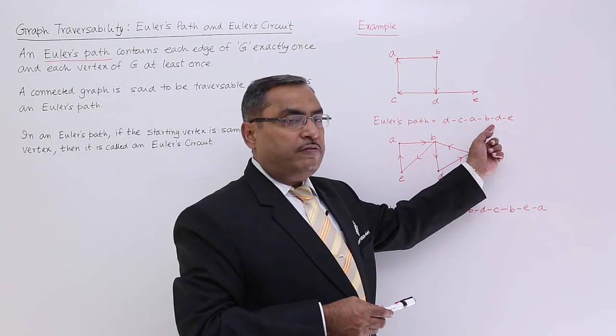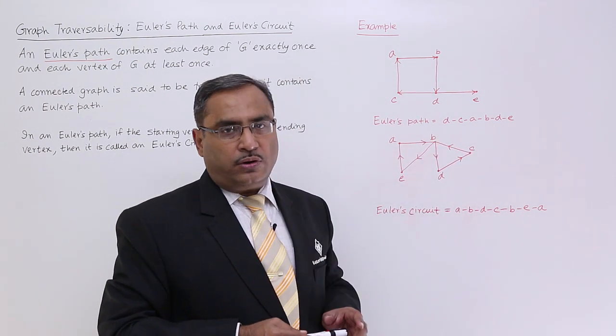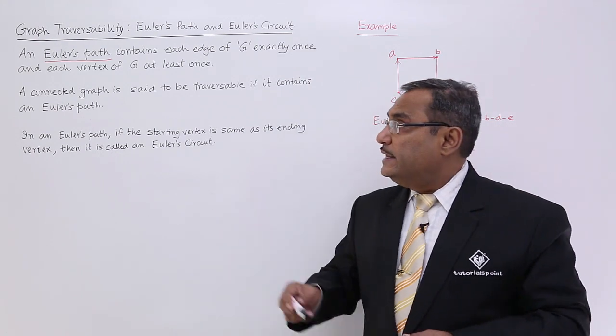All the nodes have got traversed at least once and all the edges have got traversed once only. That is known as the Euler's path.